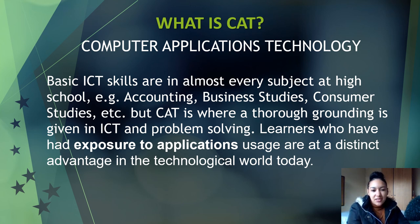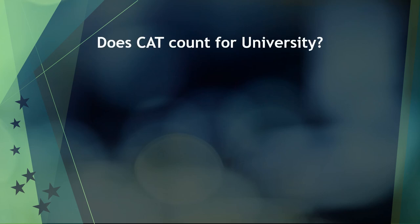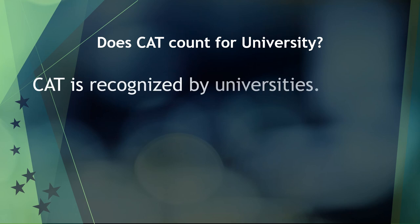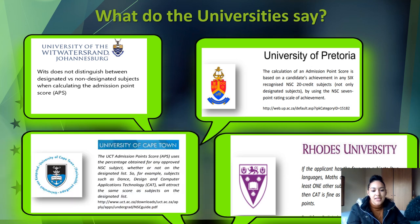I also often get asked, what is the difference between IT and CAT? The difference comes in with the practical component. In CAT, we deal with a lot of end user applications — applications that users interact with and make use of when using a computer. Whereas IT focuses on a more programming component in terms of the practical aspect. That is the biggest difference between the two subjects. CAT is also a recognized subject, accepted like any other school subject when applying for entrance at universities.